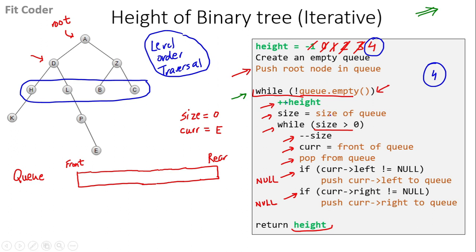Basically, we are doing a level order traversal and whenever we change the level, we increment the height variable. There are 4 levels here, so the height is 4. The time complexity of this method is O(n) because we traverse each node only once. Now let's have a look at the implementation.